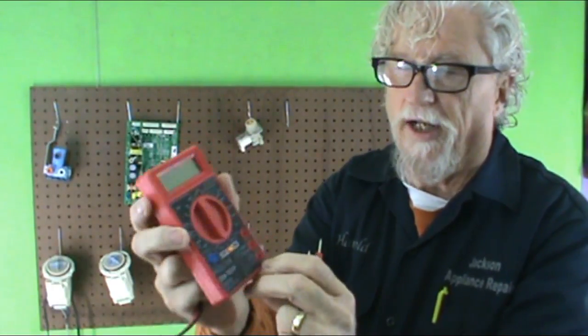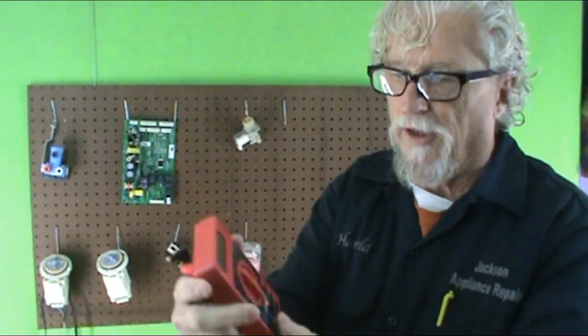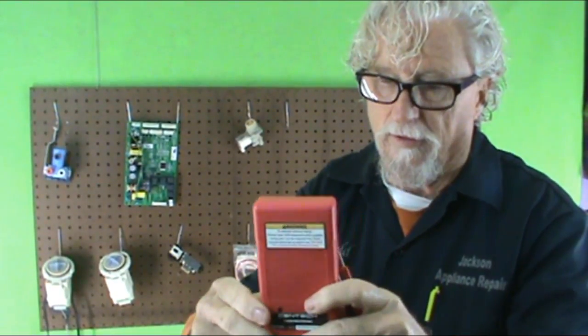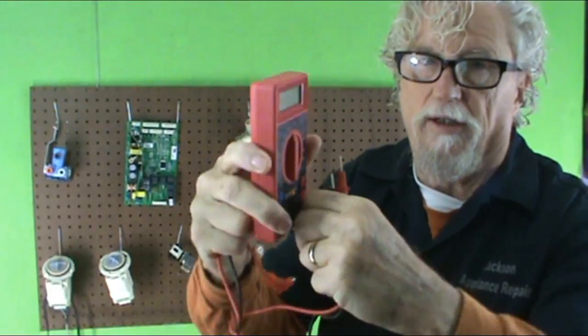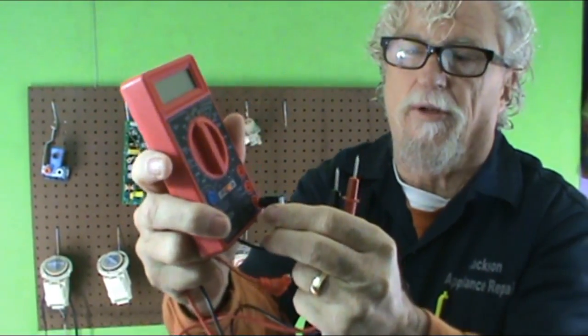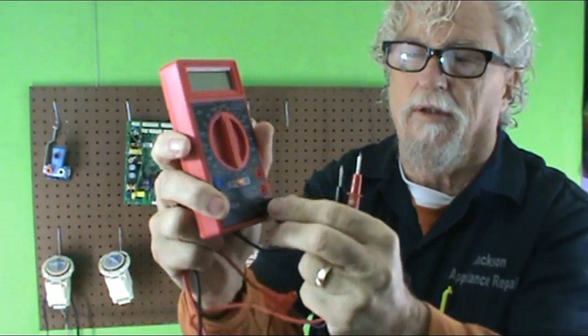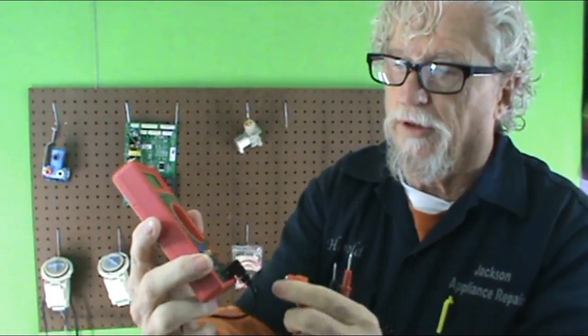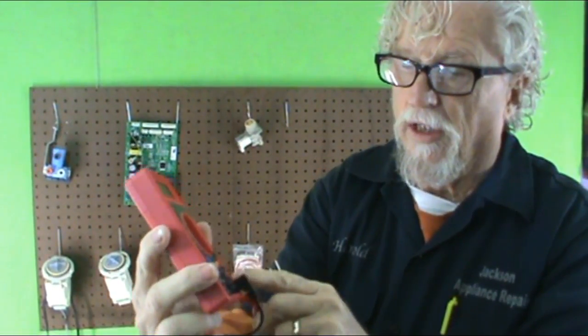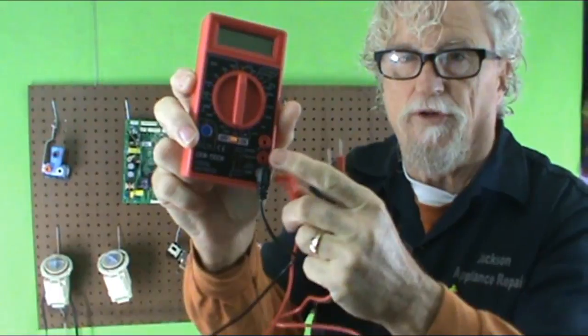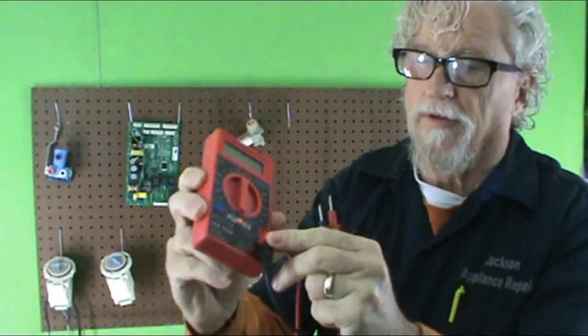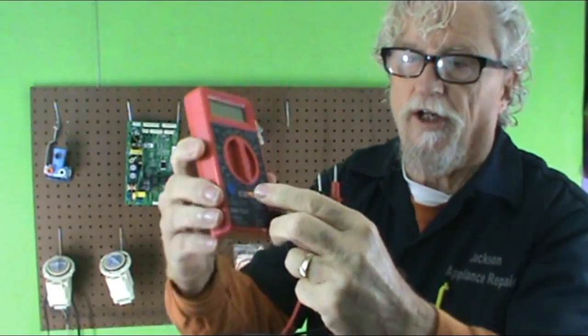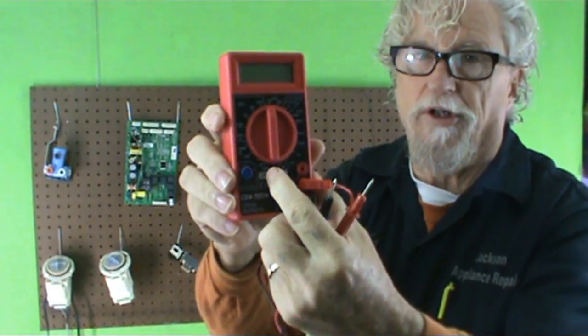Now on this particular one, the common is down here at the bottom. We're going to plug the black one into that one just like that. Let me show you again, I'm just going to plug that in right there. And then the red one, we're going to check out the ohms first. We're going to do the ohms right here first, and now when you plug those in, you can turn the switch here and turn it on.